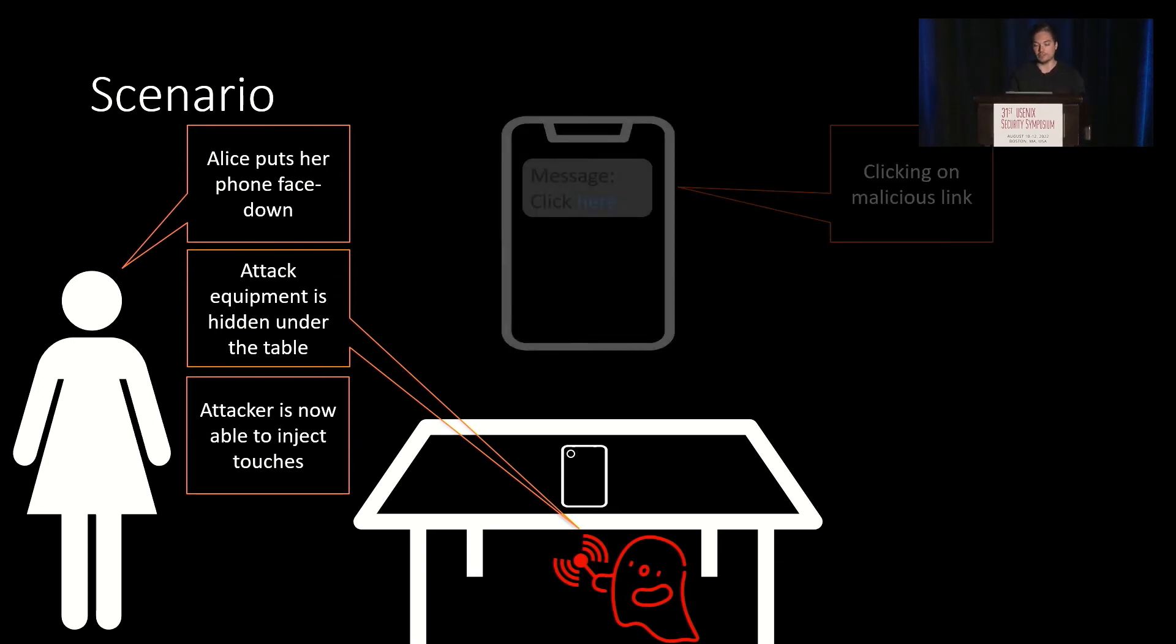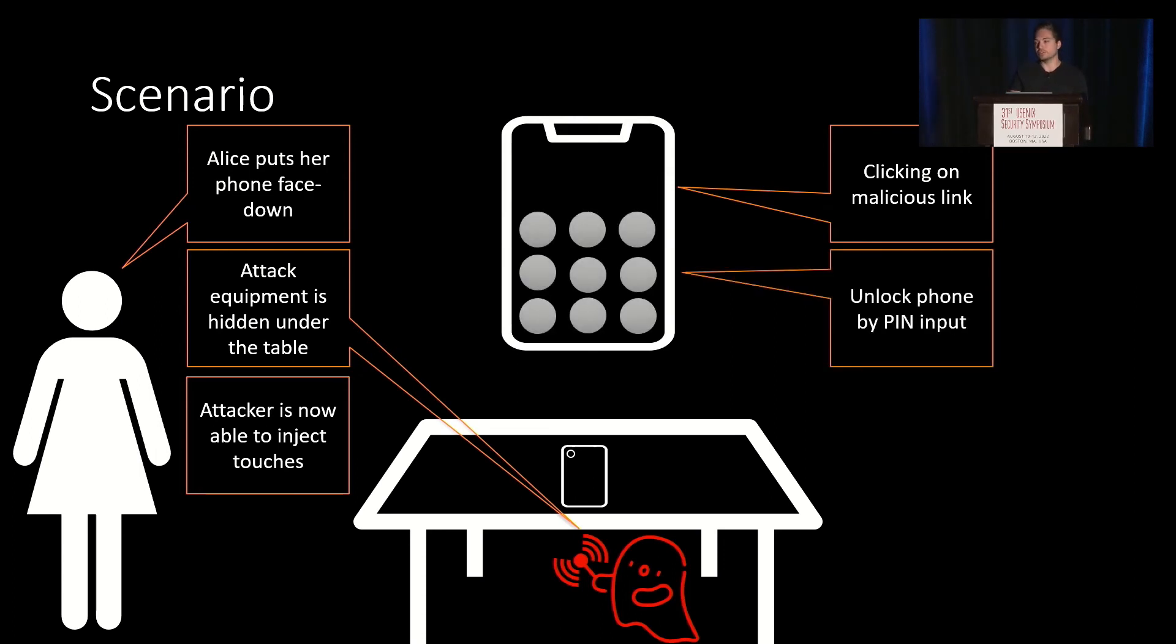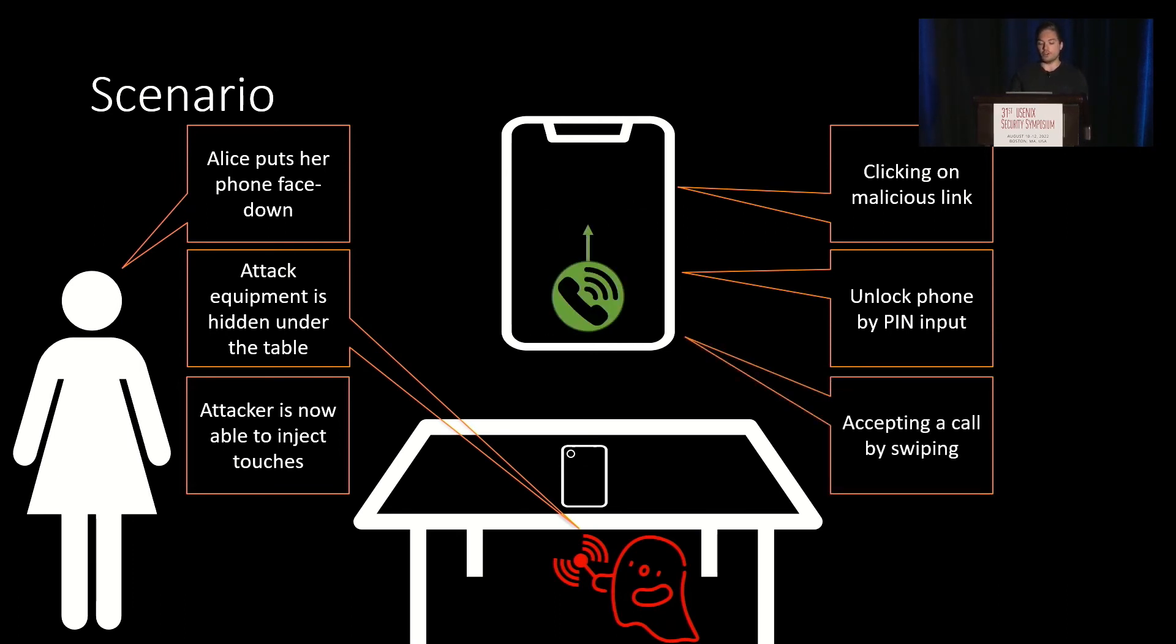So what can the attacker do? For example, sending a message with a malicious link, clicking on it, unlocking the phone by inputting a PIN number and advancing its attack, or even calling the phone, injecting a swipe up action, and accepting the phone to eavesdrop on Alice.